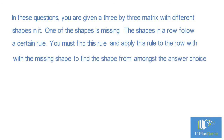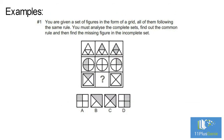Example number one: you are given a set of figures in the form of a grid, all of them following the same rule. You must analyze the complete sets, find out the common rule, and then find the missing figure in the incomplete set. Row one shapes: in each row there are three identical shapes. Shading — one shape has no shading, one shape has a quarter of it shaded, and the third shape has half of it shaded.